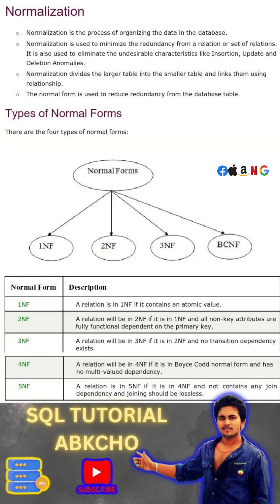And finally we have Fifth Normal Form (5NF), which deals with cases where data redundancy is minimized by decomposing tables into smaller ones.